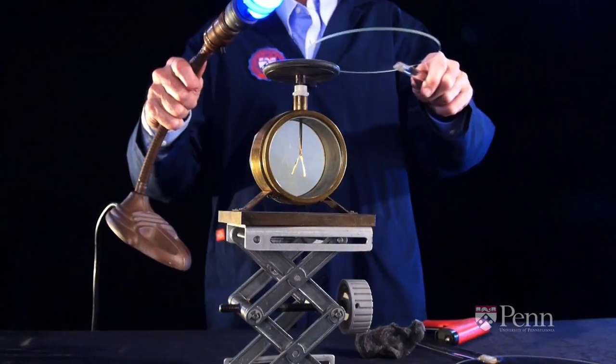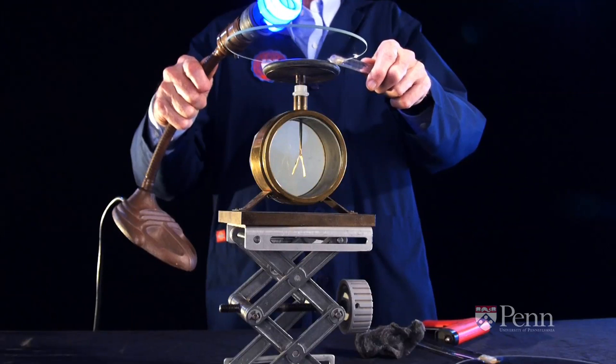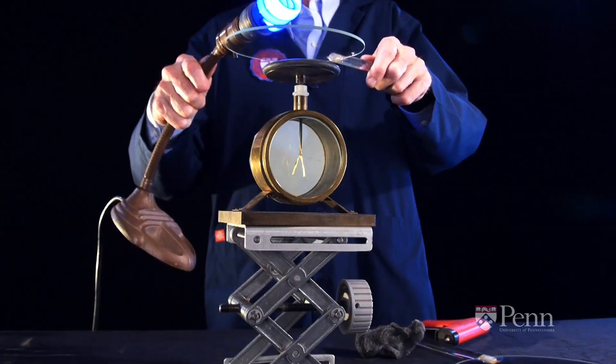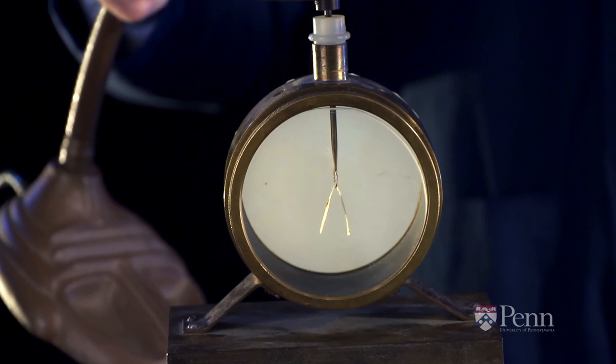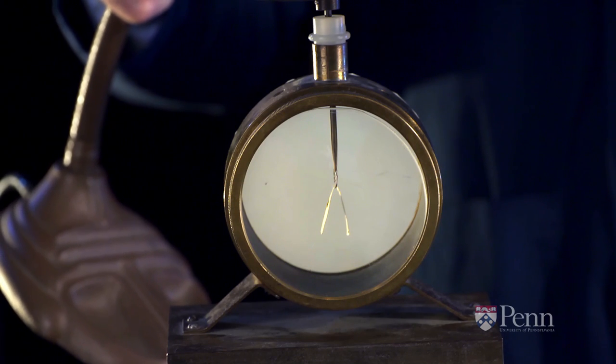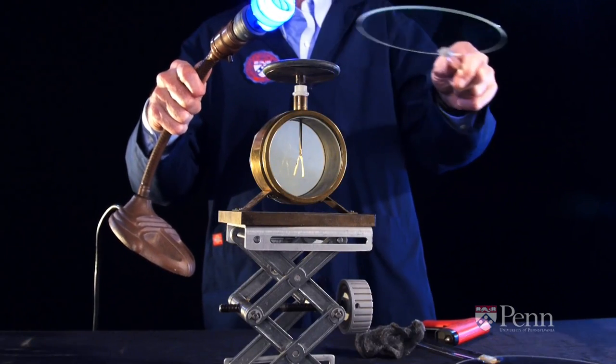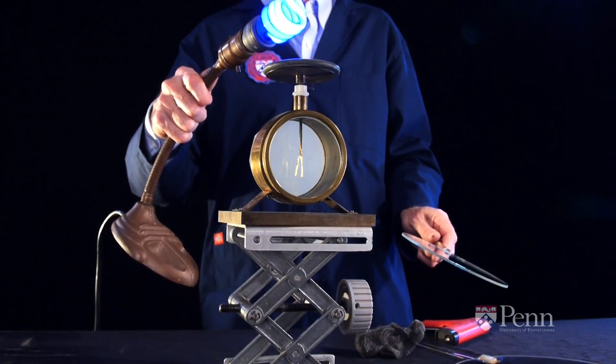Glass, not plastic. If we place that disc of glass between the zinc and the ultraviolet light, you will note that the discharging of the electroscope stops. The glass absorbs the ultraviolet light.